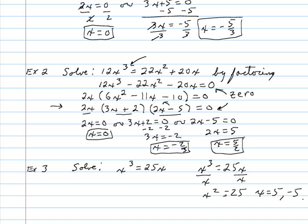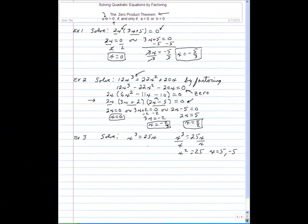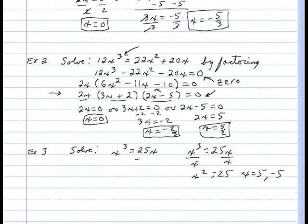But let's work this by the zero product theorem, which is the way that we should be working it. Just like in the first problem and the second problem, we need a zero on one side and a product on the other. So the first thing I'm going to do is make a zero on the right side by taking 25x from both sides. So I get x cubed minus 25x equals zero. Now the next thing I need to do is make a product on my left side by factoring.